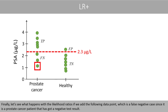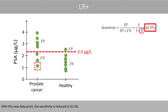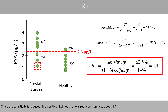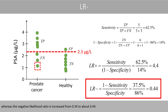Finally, let's see what happens with the likelihood ratios if we add a new data point — a false negative case, since it is a prostate cancer patient who got a negative test result. With this new data point, the sensitivity is reduced to 62.5%. Since the new data point comes from a person with the disease, the specificity does not change. Since the sensitivity is reduced, the positive likelihood ratio is reduced from 5 to about 4.4, whereas the negative likelihood ratio is increased from 0.34 to about 0.44.